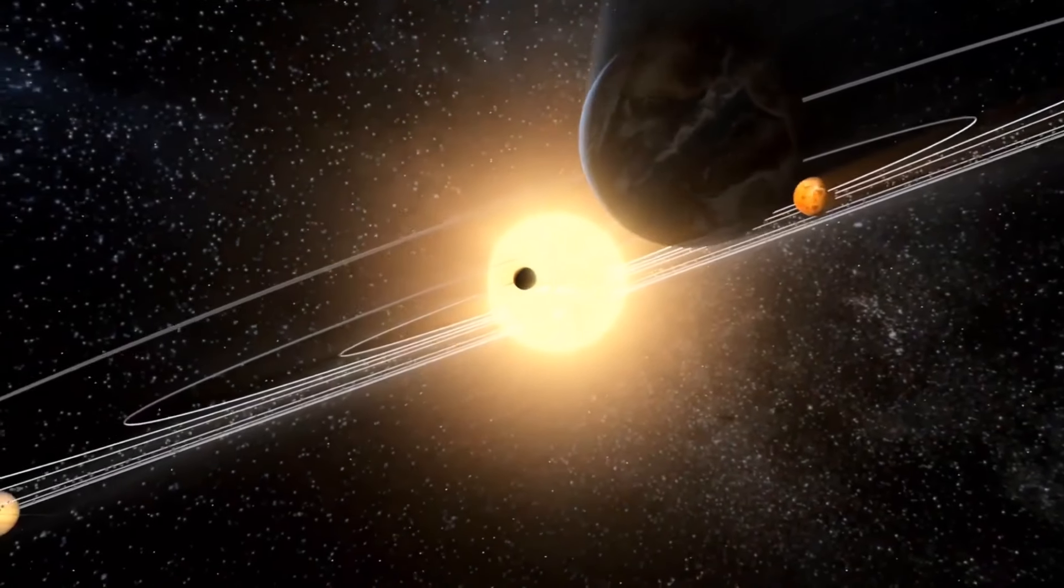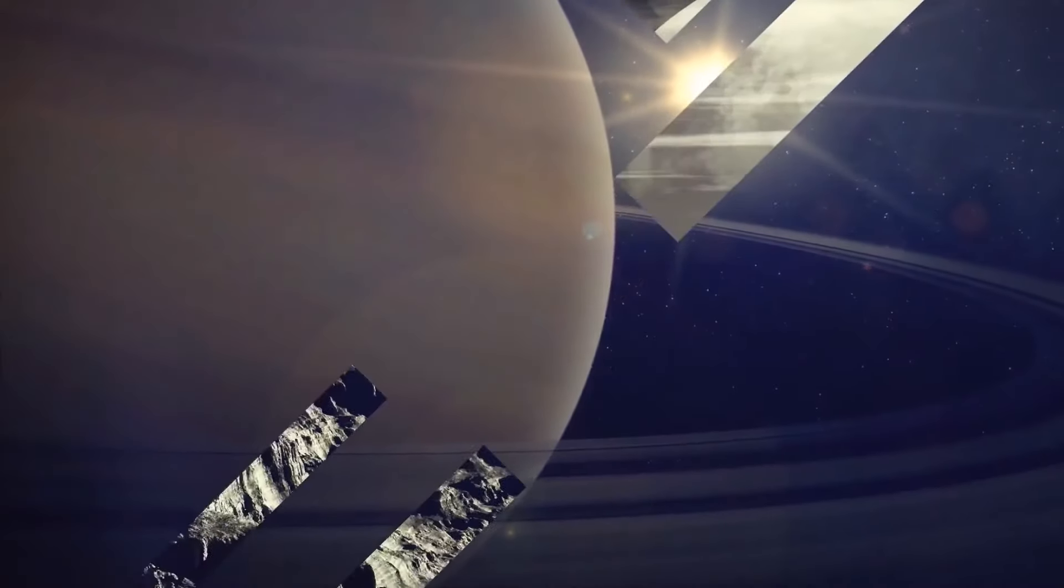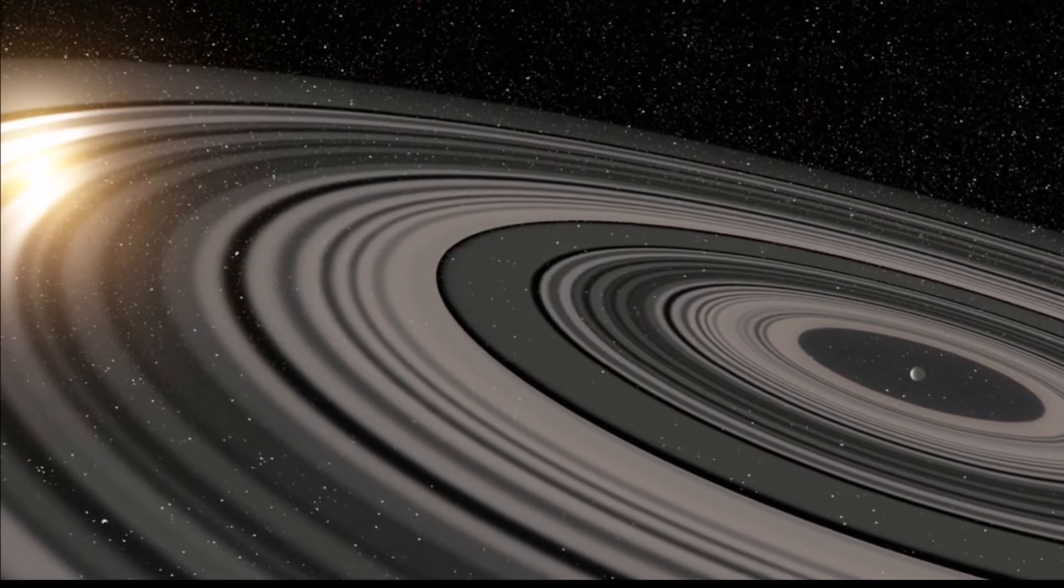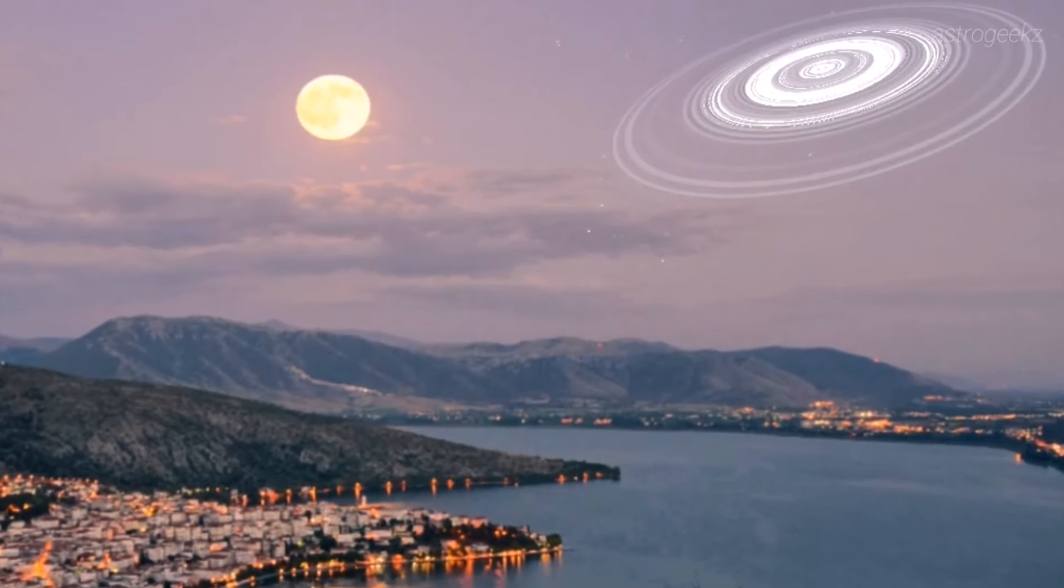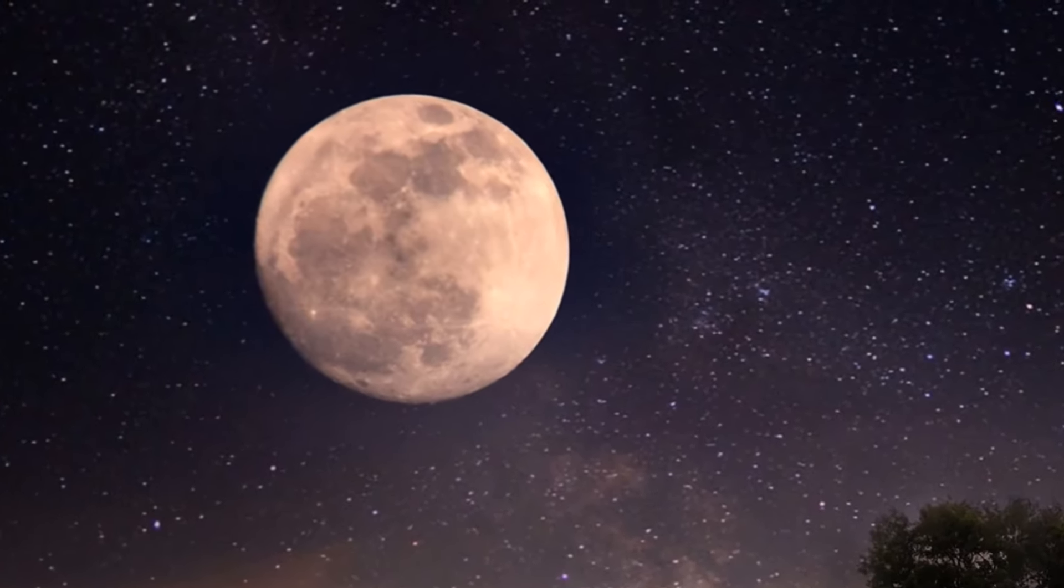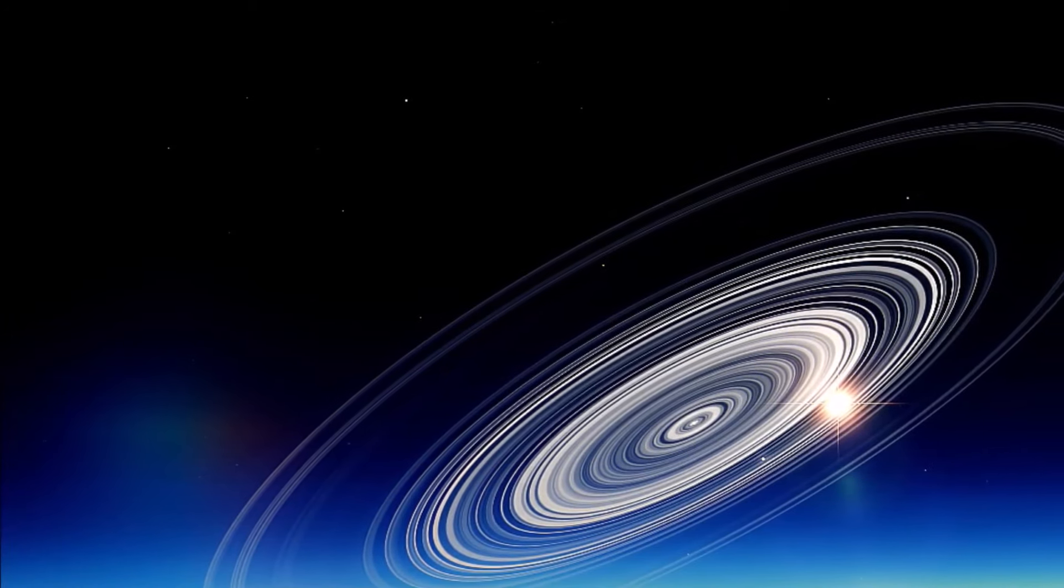If you place the extrasolar ring system circling the J1407b around Saturn, the rings would extend 1.3 billion kilometers into the Earth's sky and appear many times bigger than a full moon. And if you are still wondering why the J1407b is called a super Saturn or a Saturn on steroids, there goes your answer.